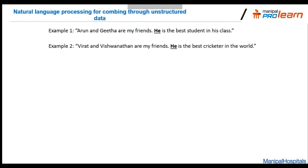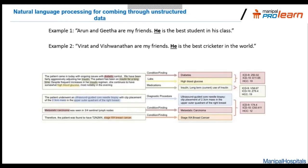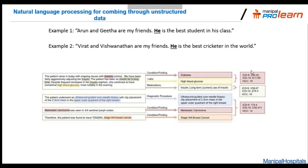Here's a more medical example. A doctor's note says 'patient came in today with ongoing issues with diabetic control.' NLP should pick up the word 'diabetic,' identify that diabetes is the condition, and in advanced cases, even automatically assign the appropriate ICD code for that type of diabetes. That's the challenge data science and NLP have tackled to improve our understanding of healthcare data.